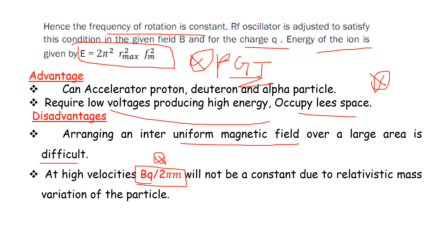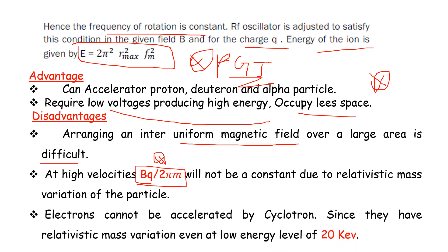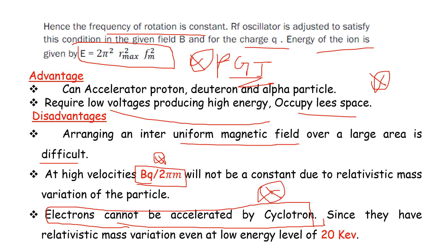Electrons cannot be accelerated by the cyclotron — this is a very important and frequently repeated exam question. This is because electrons undergo relativistic mass variation even at low energy levels of about 20 kilo-electron volts.